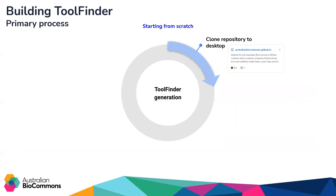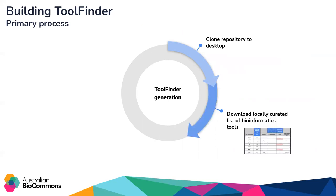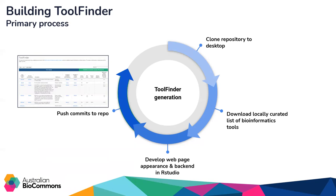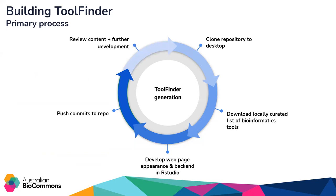In order to build Tool Finder — if you wanted to start from scratch and rebuild the service from what's available in the GitHub repository — you would clone the repository, download a locally curated list of bioinformatics tools maintained by the BioCommons, then develop the Tool Finder web page: its appearance, its back end, and the content in our studio. Once happy with the current version, you can push that up to the repository and review all the content and further develop it as needed.